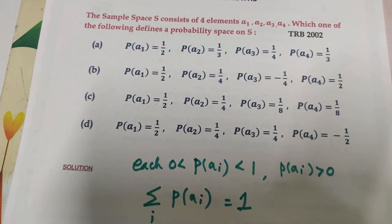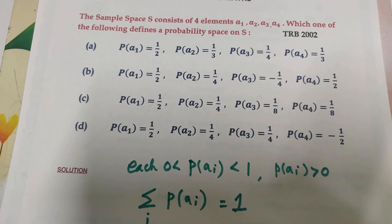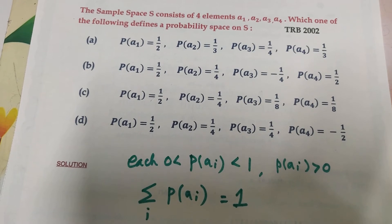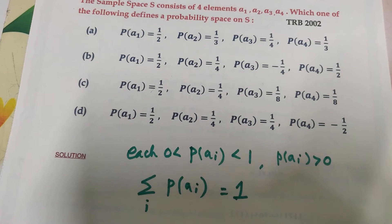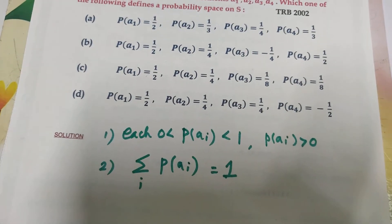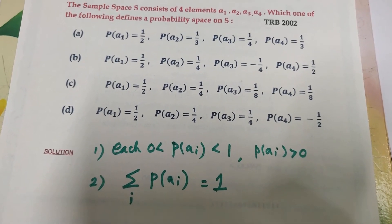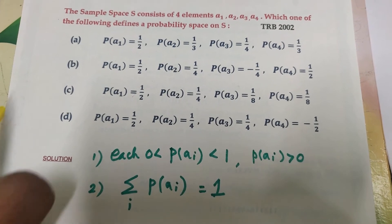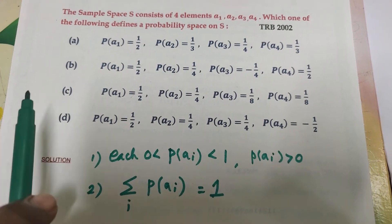We define each element's probability, and the sum of all possibilities must equal 1. The value for any single event must be between 0 and 1. We add all probabilities and their sum must equal 1. These are the two key conditions for a valid probability space.